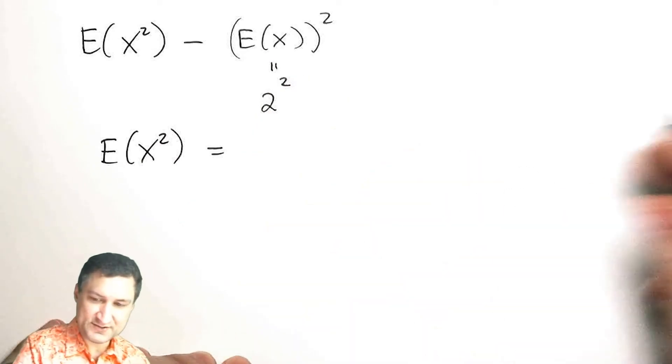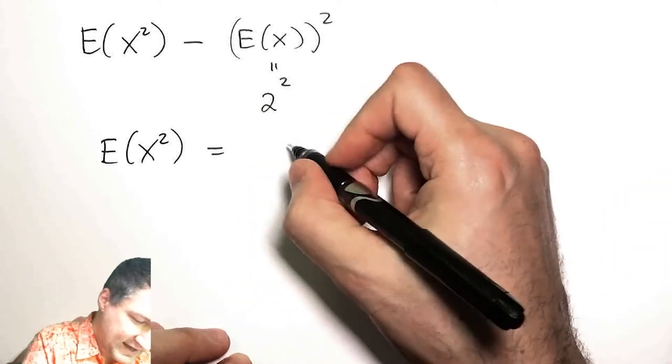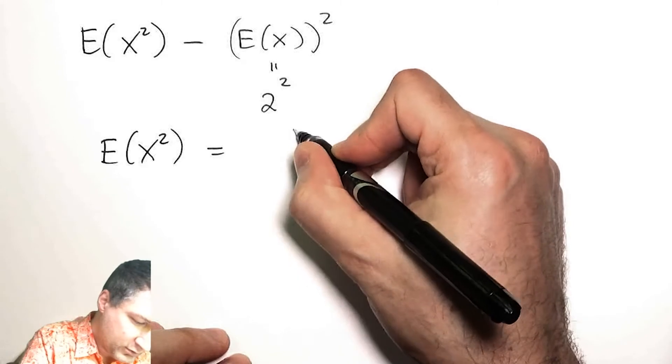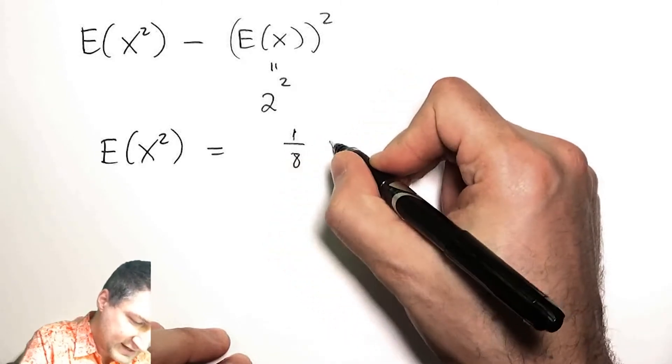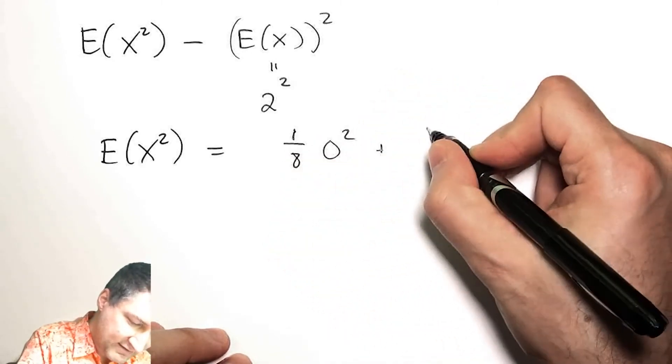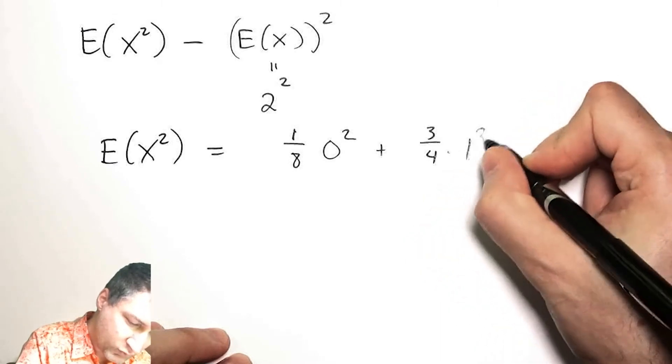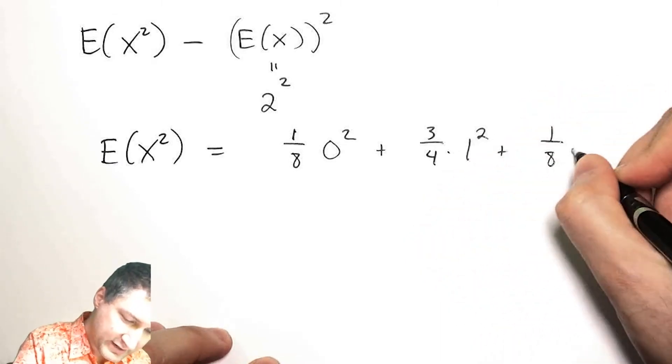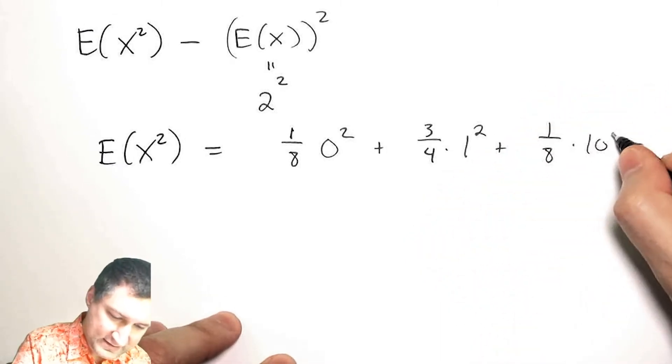What I don't know is this expected value of X squared. That's an easy thing to compute. Referring back to my picture, I have probability 1/8 of getting 0 squared, probability 3/4 of getting 1 squared, and probability 1/8 of getting 10 squared.